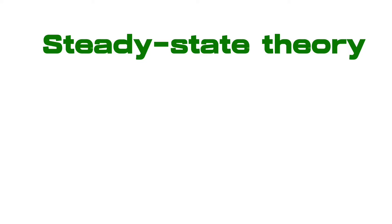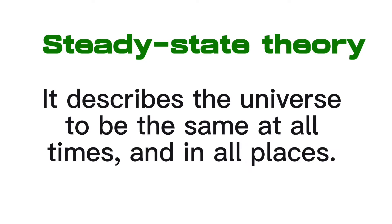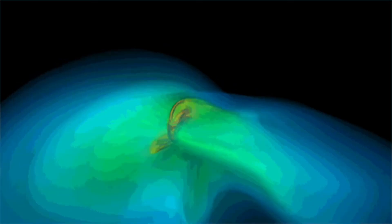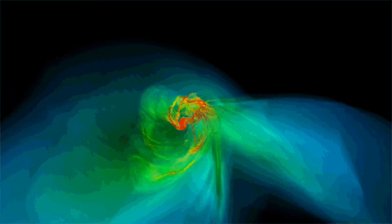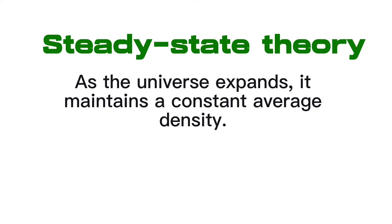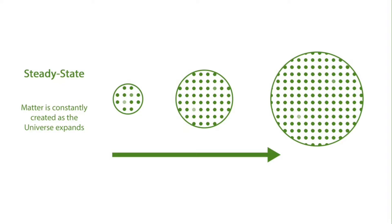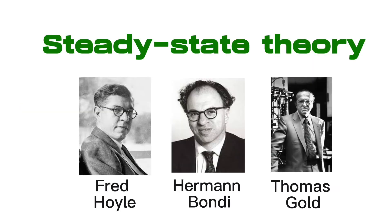The next theory is the steady state theory. It describes the universe as being the same at all times and in all places, contradicting the Big Bang theory. Even so, there are still small changes happening, such as the formation of new matter or stars. As the universe expands, it maintains a constant average density because new stars are continuously created at the rate needed to replace stars which have used up their fuel. This theory was developed in 1948 by Fred Hoyle, Herman Bondi, and Thomas Gold.